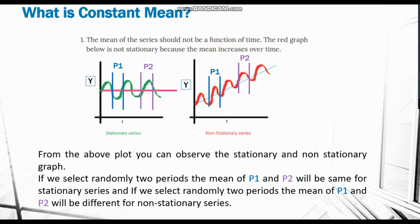The mean of the time series should not be a function of time. In a stationary series, when you take two random periods P1 and P2 and calculate the average, it will be the same. In a non-stationary series there will be a trend — for example, taking periods from 1980–1990 and 2010–2020, the average should not increase or decrease; it should be constant.